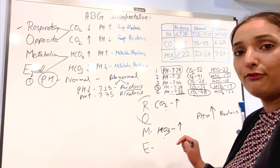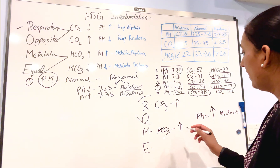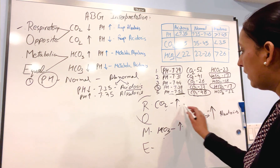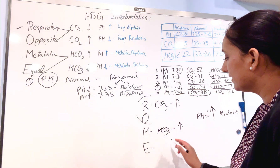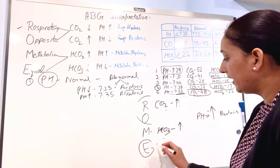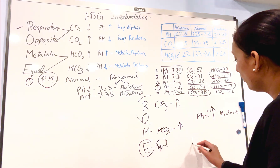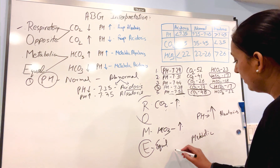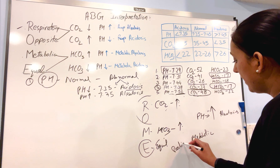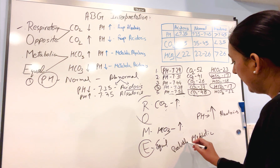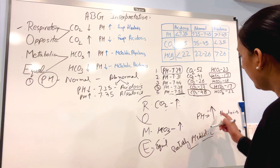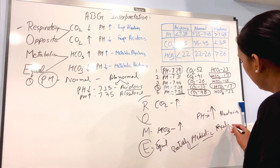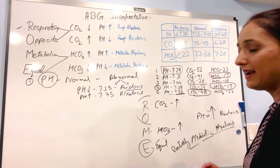How do we find which system? Both bicarb and pH are going in equal direction — equal direction means this is metabolic. So the answer is partially compensated metabolic alkalosis.